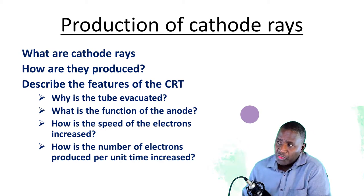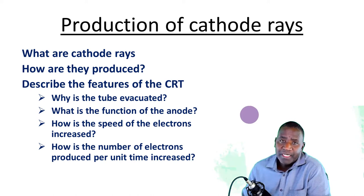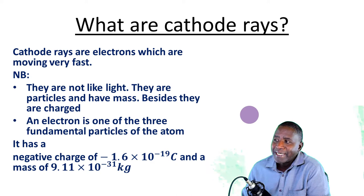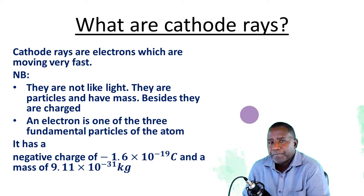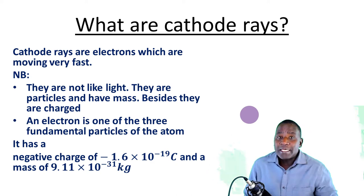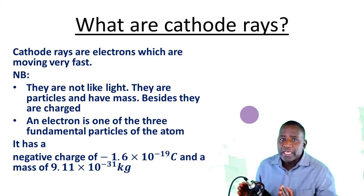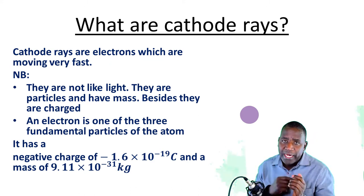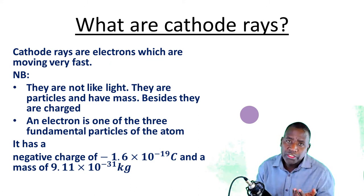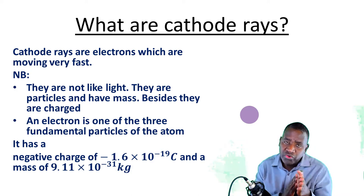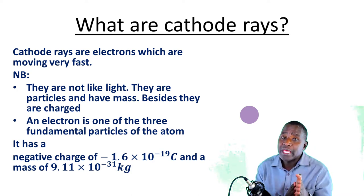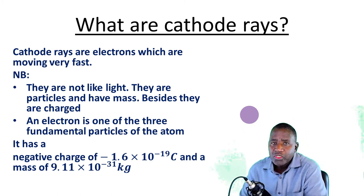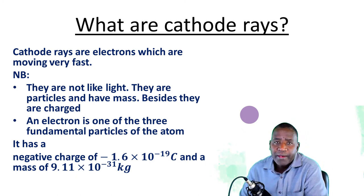These are some of the questions we want to address in the production of cathode rays. First of all, what are cathode rays? Cathode rays are simply fast-moving electrons — electrons which are in motion, moving in a straight path and moving very fast. When you have electrons which are in motion and moving very fast, we refer to them as cathode rays.